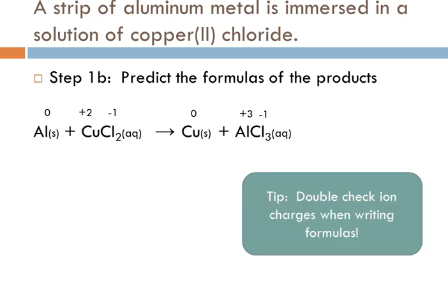This is a single replacement reaction, so we're going to make copper metal and aluminum chloride. You do want to make sure that you really double-check those ion charges, that your formulas are written correctly. The copper is going to be copper metal, it's neutral, it's not charged. The aluminum forms a +3 ion. Chloride ions are -1, so you have to have that 1 to 3 ratio in your subscripts. Always make sure your formulas are correct before you worry about balancing.